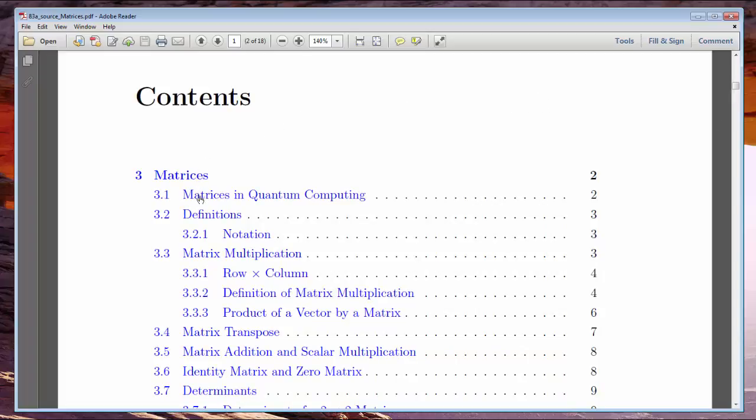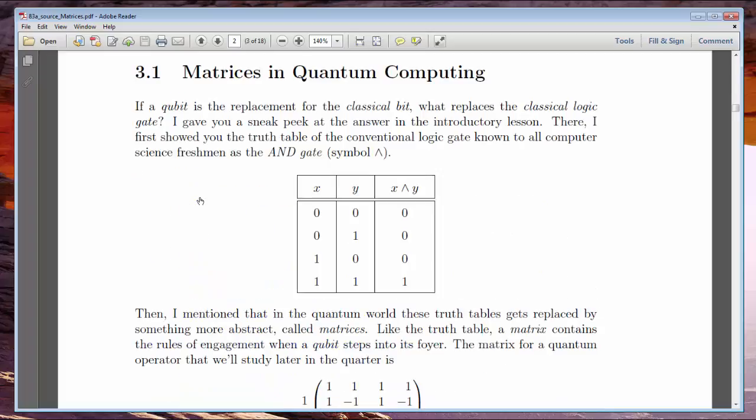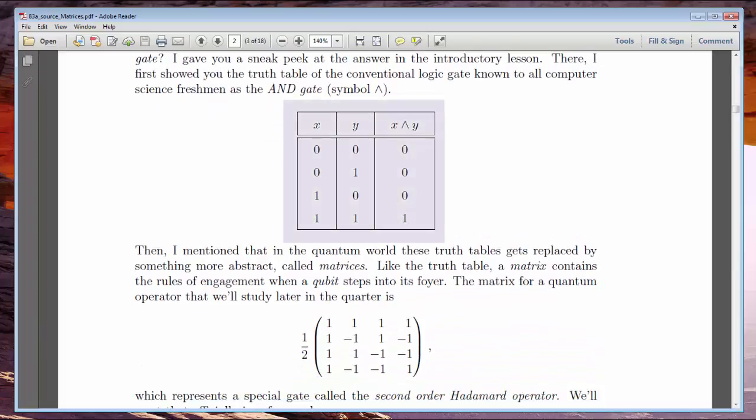Today, we talk about matrices. In this chapter's introduction, I try to motivate you by saying that matrices are going to replace the truth tables of classical computing as a description of quantum gates. But there's a larger issue at stake here.